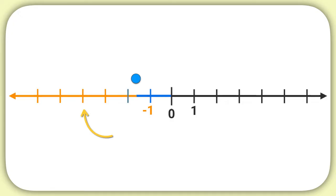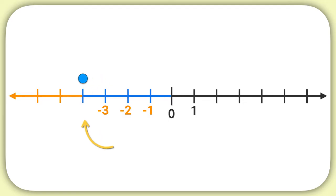If I move another dash, I'm at negative 2. A third dash would be negative 3. And finally, I get to the dash I'm looking at — this would be negative 4. So this dash represents negative 4.